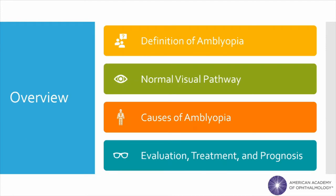First, we will define amblyopia and then briefly review normal visual development. Next, we will discuss the causes of amblyopia. And finally, we'll talk about the evaluation and treatment of amblyopia as well as a general prognosis for children with this condition.